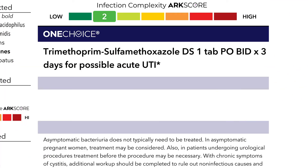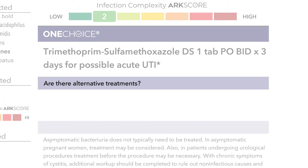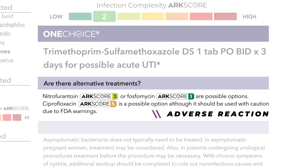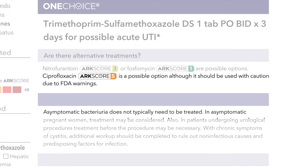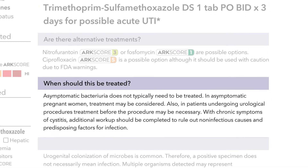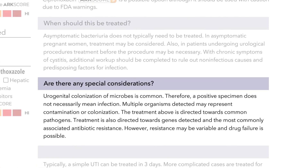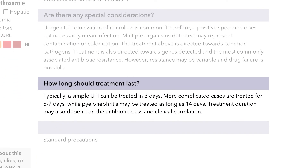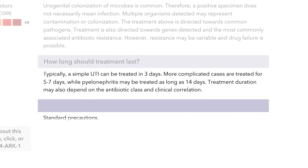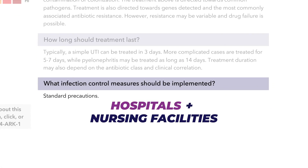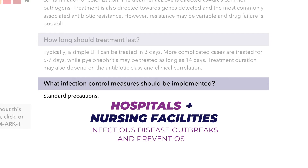Below is additional information, beginning with alternative treatment options with the antibiotics' corresponding adverse reaction arc score. Information on when the infection should be treated, special considerations regarding the specific organisms and genes identified, how long the infection should be treated, and infection control measures for hospitals and nursing facilities that need to be mindful of infectious disease outbreaks and prevention.